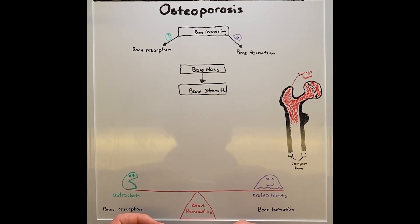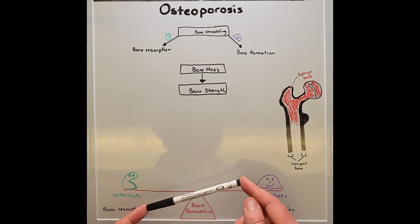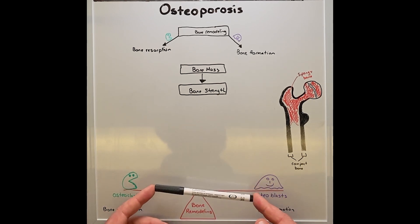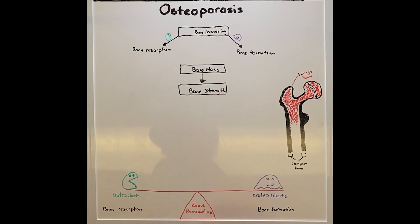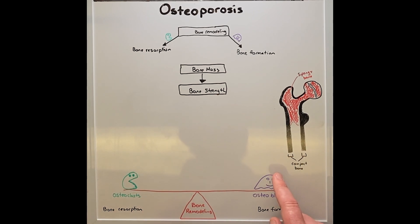Although bone may appear to be unchanging, it is actually a very dynamic tissue and is constantly being remodeled, which is an active process between bone being broken down, called reabsorption, and bone being made, called bone formation. Bone cells known as osteoclasts cause bone to be reabsorbed, while bone cells called osteoblasts form new bone.